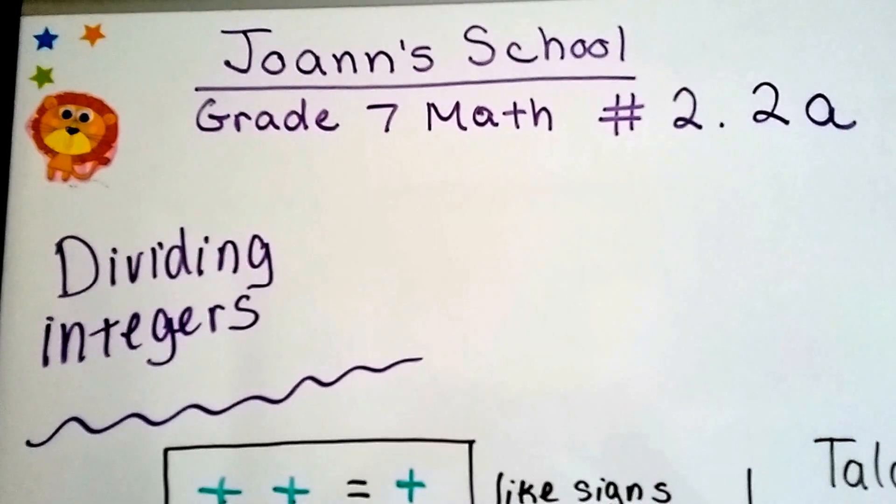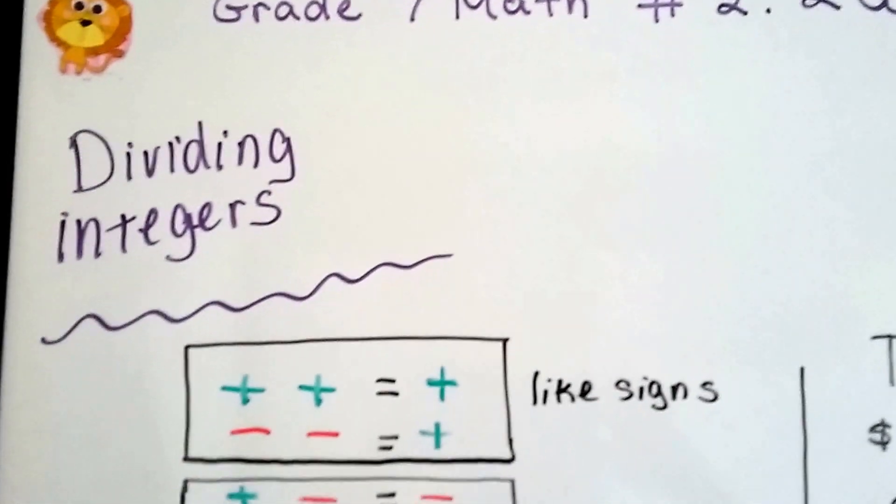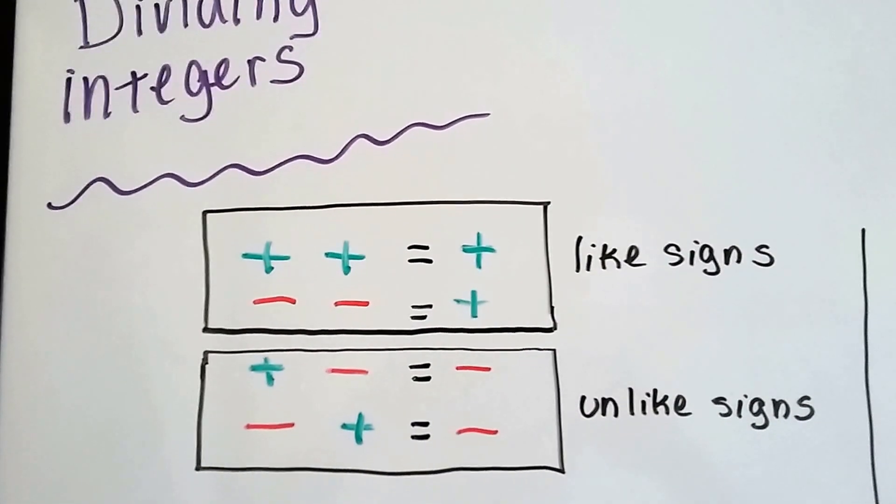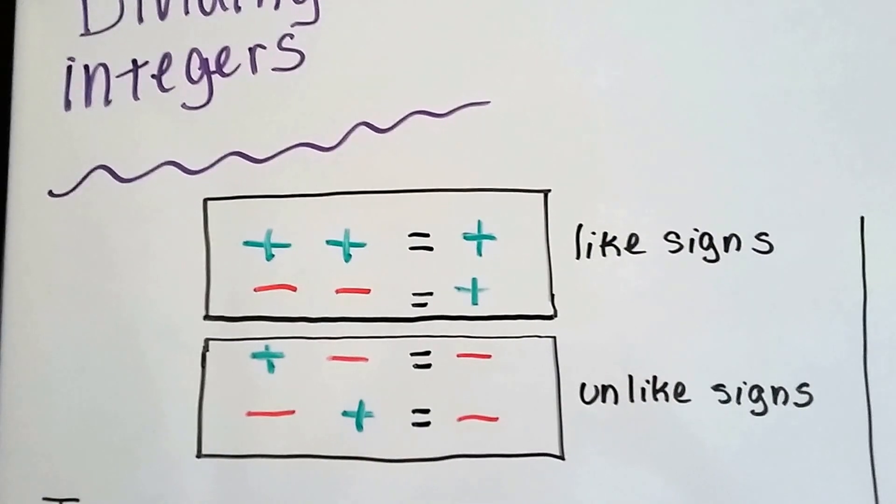Grade 7 math number 2.2a, Dividing Integers. Alright, do you remember this from when we were multiplying integers? It hasn't changed, and you know why?